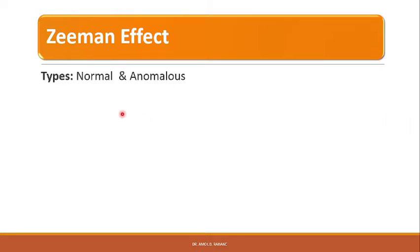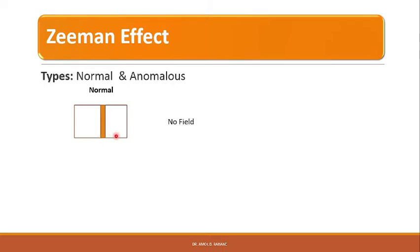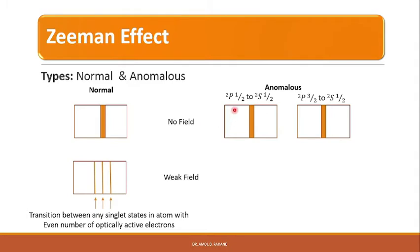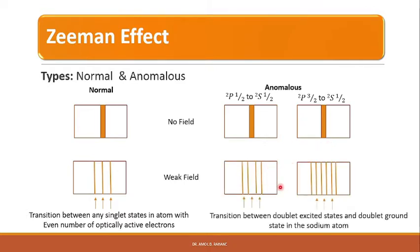There are two types of Zeeman effect: normal and anomalous. Normal Zeeman effect occurs in the case of singlet-to-singlet transitions. In the absence of an external magnetic field, this gives rise to one single spectral line, which splits into three different spectral lines when a weak magnetic field is applied. In the case of anomalous Zeeman effect, doublet-to-doublet transitions — for example in sodium atoms — give two spectral lines that split into 10 different spectral lines when a weak magnetic field is applied.